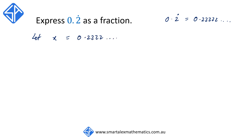Our aim is to eliminate all the digits after the decimal point. We do that by multiplying both sides by 10. On the left we get 10x and on the right we get 2.2222. Remember, when we multiply a decimal by 10 all we need to do is simply move the decimal point one place to the right.